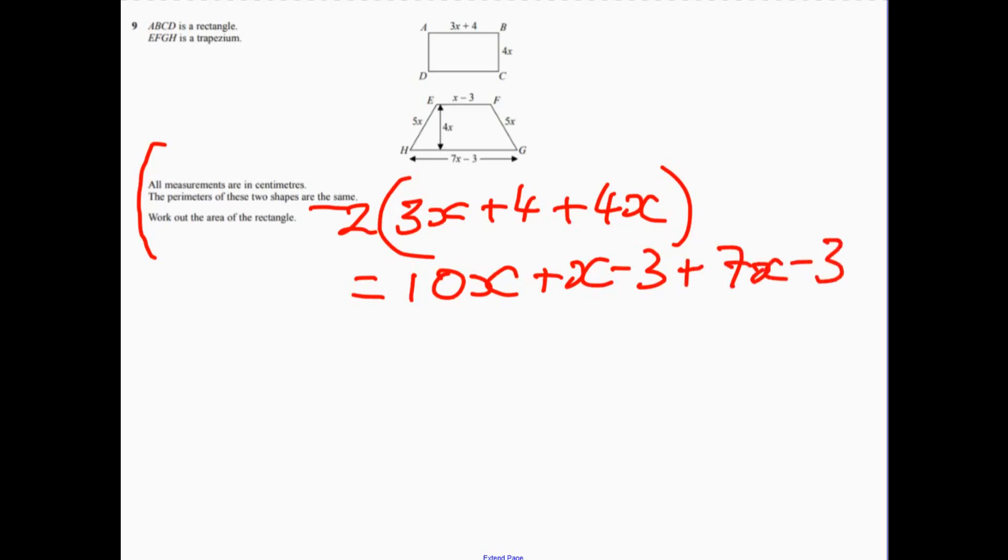Let's multiply all of that out. So the first one, that's 7x, that's going to be 14x. So this is the rectangle, plus 8, and that's going to equal... We've got 10, 11, we've got 18x, take away 6.